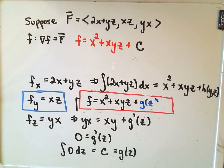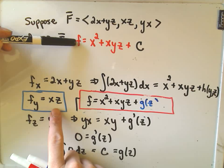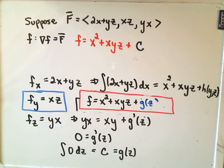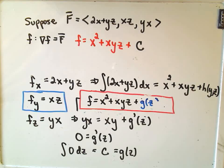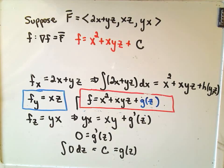You can check: if you take the partial with respect to x of this function, you get 2x plus yz. If you take the partial with respect to y, you get xz. And if you take the partial with respect to z, you get yx. So this is in fact a potential function for the original vector field. I'm going to do another example of finding a potential for a conservative vector field, and that one I'll step through a little bit faster. I hope this helps — please feel free to post any comments or questions.